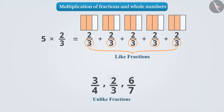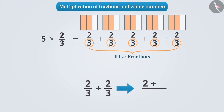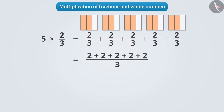Here, we are adding like fractions. To add like fractions, we add the numerators and keep the denominator the same. Thus, by adding 2 thirds 5 times, we will get 10 by 3. Hence, the result of 5 multiplied by 2 by 3 is 10 by 3.